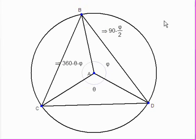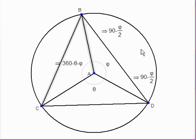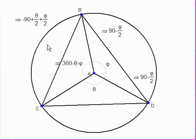Why is that the case? Well, because A is the center of the circle, AB is the same length as AD, so the triangle ABD is isosceles. This means the angle ABD is the same size as the angle ADB, and that size has to be (180 minus Phi) divided by 2, which is 90 minus Phi upon 2. Using the same logic, the angle ABC has to be (180 minus (360 minus Theta minus Phi)) all upon 2. Geometry Expressions can work that out quickly, and we see that's minus 90 plus Theta upon 2 plus Phi upon 2.